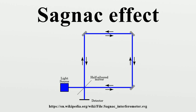The Sagnac effect manifests itself in a setup called a ring interferometer. A beam of light is split and the two beams are made to follow the same path but in opposite directions. To act as a ring, the trajectory must enclose an area. On return to the point of entry, the two light beams are allowed to exit the ring and undergo interference. The relative phases of the two exiting beams, and thus the position of the interference fringes, are shifted according to the angular velocity of the apparatus.